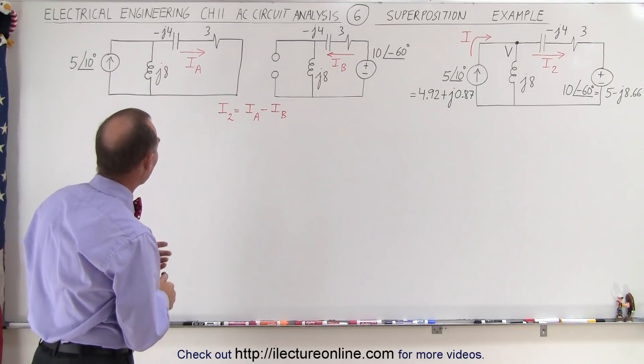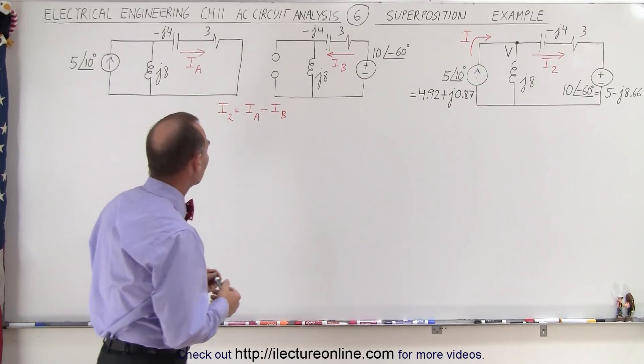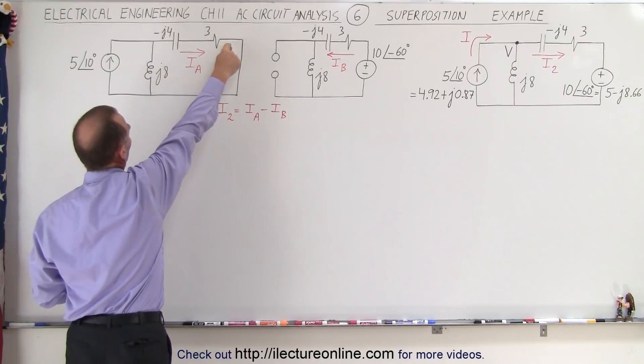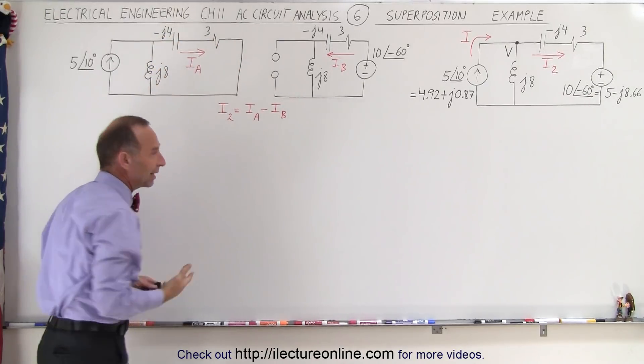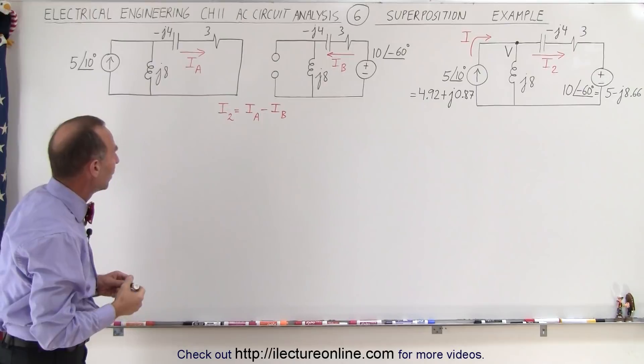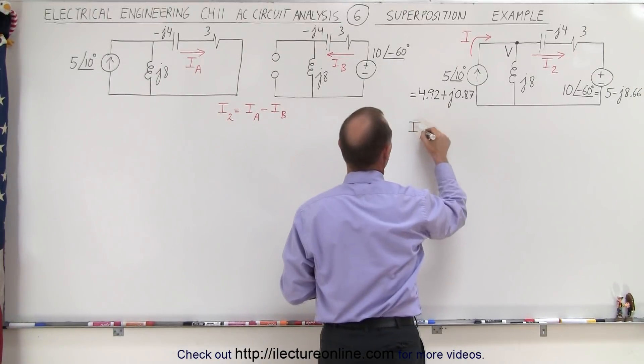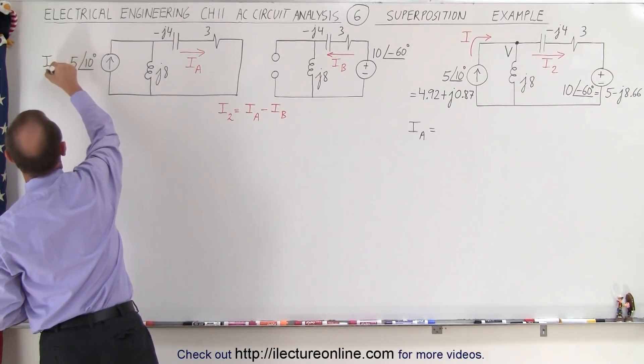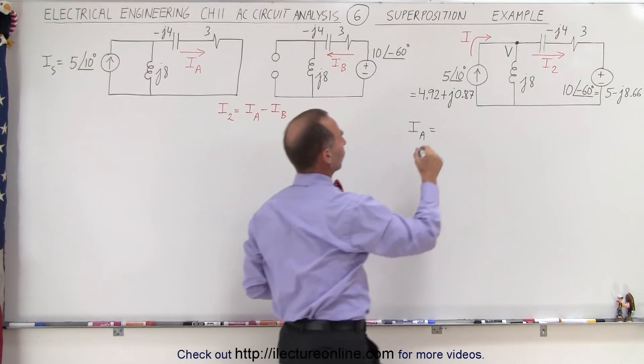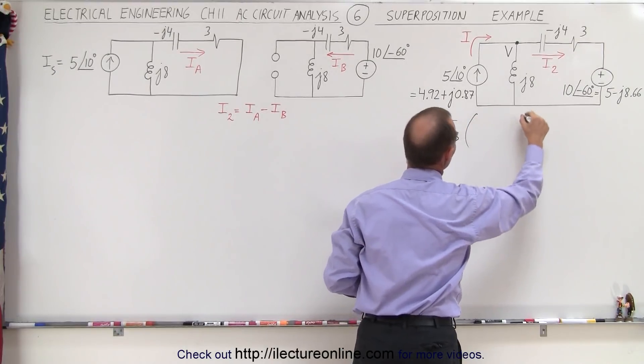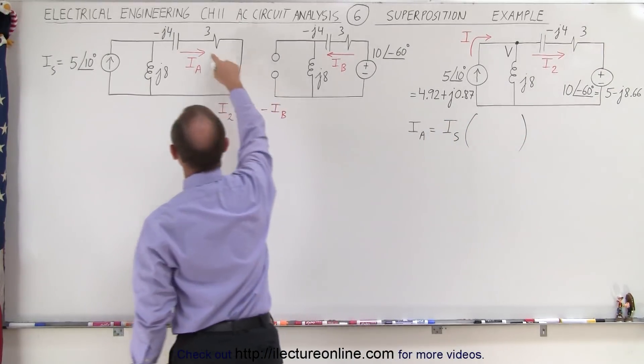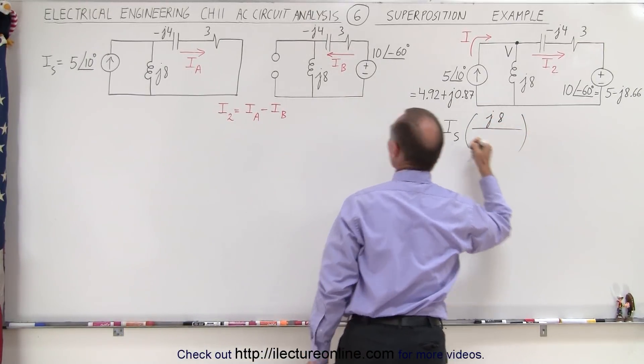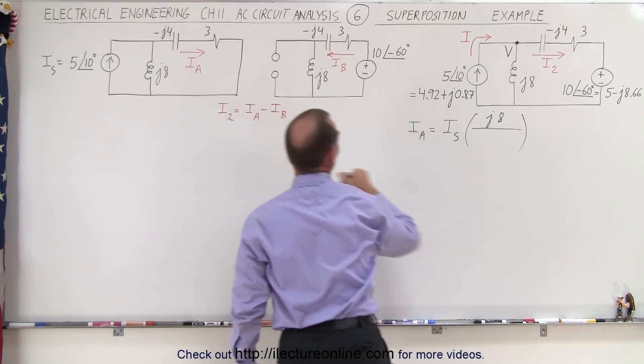All right so let's go ahead and solve for IA first. What we have here is we have a single current source and we have a branch point, so some of the current will flow here and some of the current will flow here, so we basically have a current divider. Which means that IA is equal to the current from the source, so let's call this a source current I sub s. That's equal to the source current I sub s times the impedance in the other branch which would be J8 divided by the sum of the impedances of the two branches.